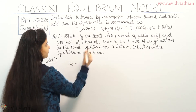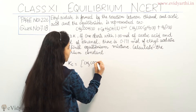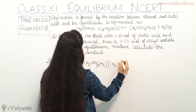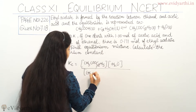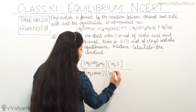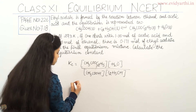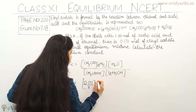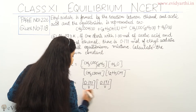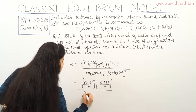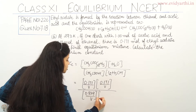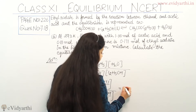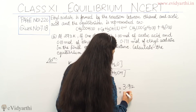Now we calculate the equilibrium constant Kc. Kc = [CH3COOC2H5][H2O] / ([CH3COOH][C2H5OH]). Substituting: (0.171/V × 0.171/V) / (0.829/V × 0.009/V). When solved, the answer is approximately 3.912, which is approximately 3.92.